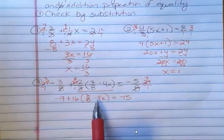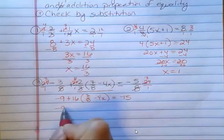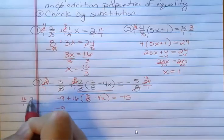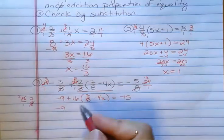And then 8 goes into 24 3 times. And that's negative 15. Now I'm going to go ahead and distribute this 16 through. And when I do 16 times 7 8ths, if you can't do that in your head, you can do it off to the side. But you should see that 8 goes into 16 twice. So I get 14.